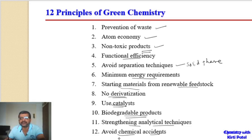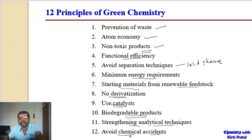The twelfth principle talks about avoiding chemical accidents. Chemical accidents are always very harmful, so they should be avoided as far as possible. These are the twelve principles of green chemistry.